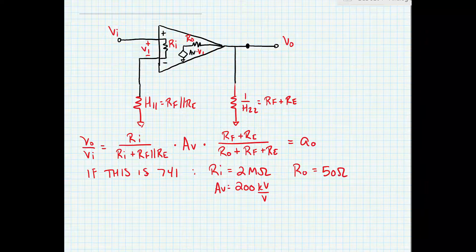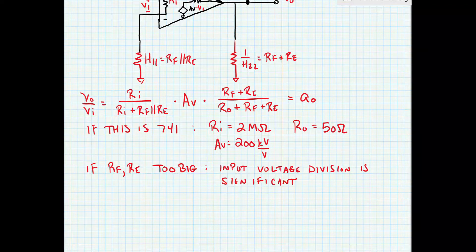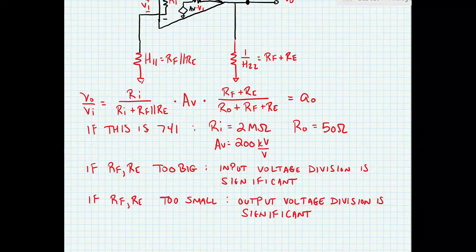The feedback loading causes voltage divisions: RF in parallel with RE at the input, and RF plus RE at the output. This tells us we can't arbitrarily size RF and RE. Even though the closed-loop gain is solely determined by the ratio of those resistors, if RF and RE are too big the input voltage division becomes significant and reduces overall gain; if too small, the output voltage division becomes significant. Typically we look for resistors in the range of a few kilohms to a few tens of kilohms so that voltage divisions won't cause too much impact on overall gain.